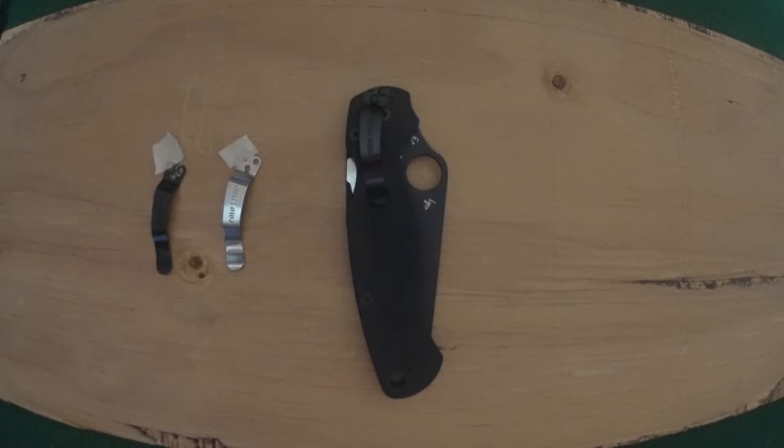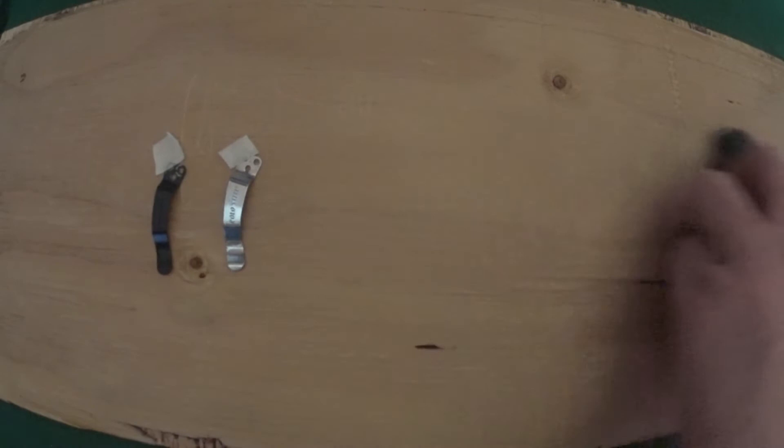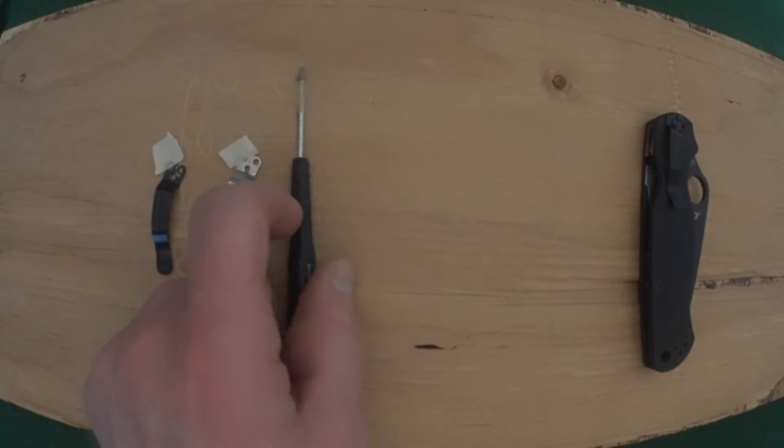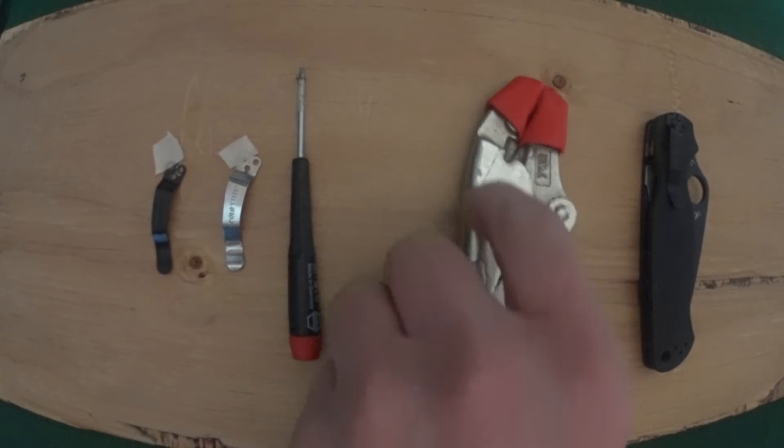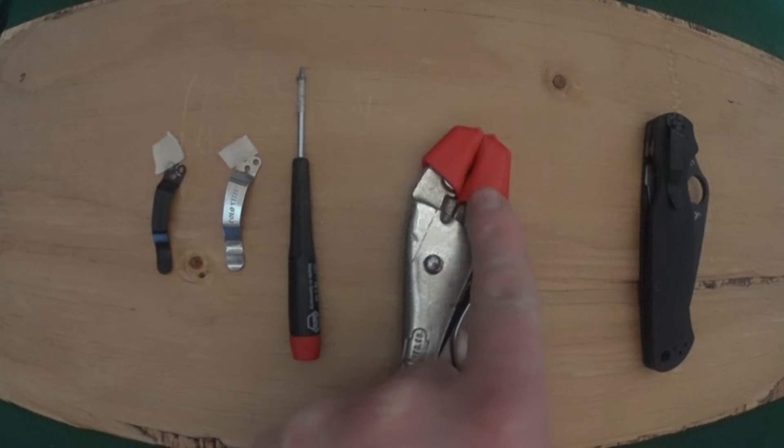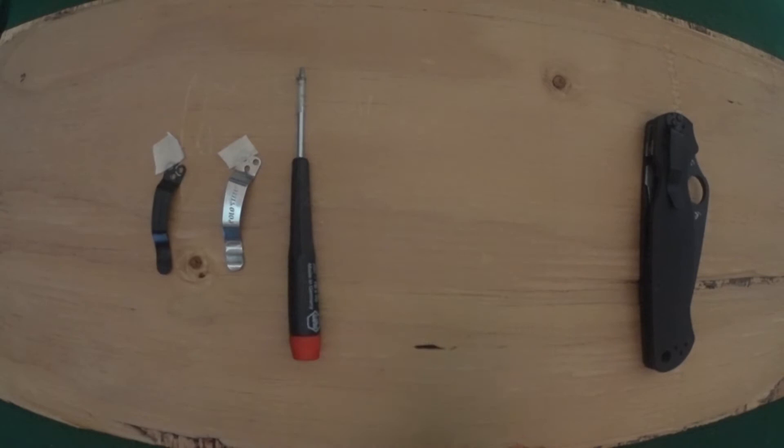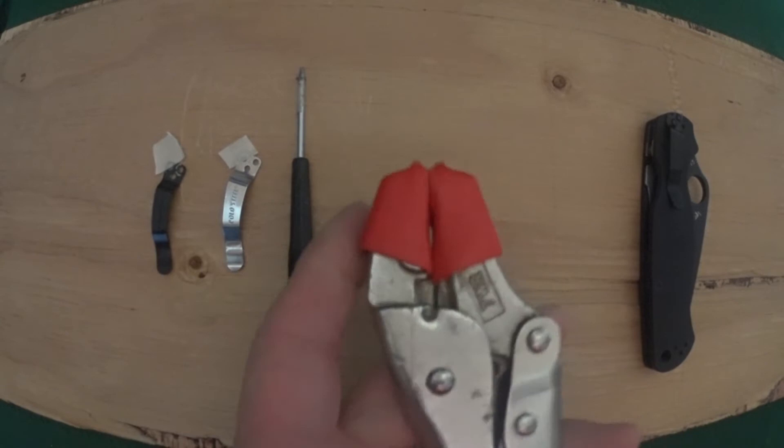Now first you're going to want to go ahead and gather these tools and materials. You're going to need a Wiha T6 Torx to take off the clip. You're going to need, well obviously the clip. You're going to need vice grips, preferably if you have the rubber guards to put over the jaws, the teeth of the vice grips, because you're going to use these to actually hold the clip while you're grinding off the section because the clip gets really really hot when you're using the Dremel.